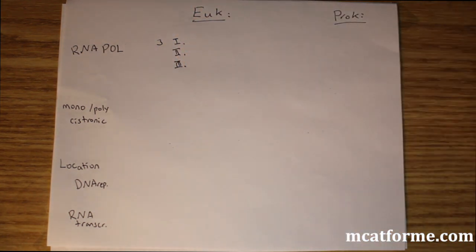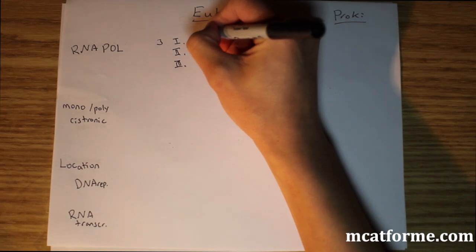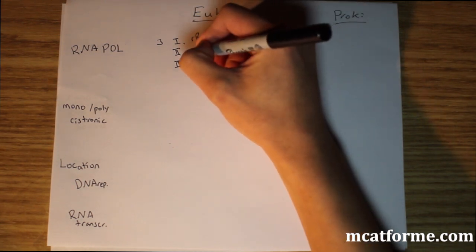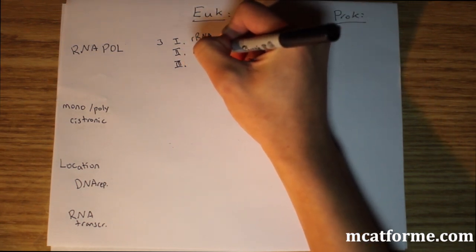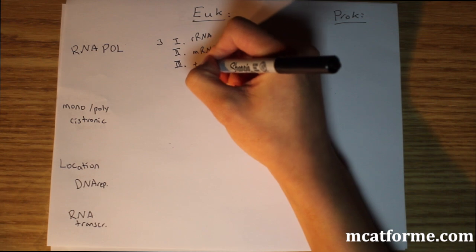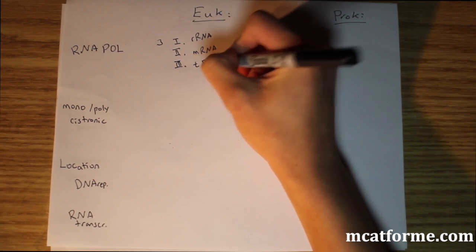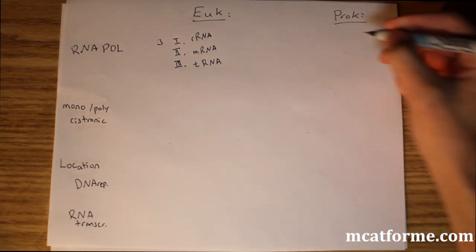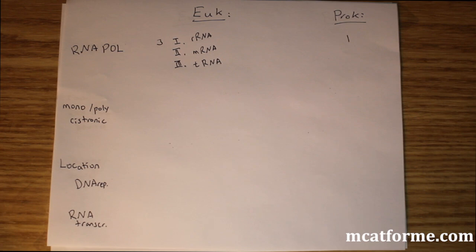The first RNA polymerase transcribes rRNA. The second transcribes mRNA. The third transcribes tRNA. In prokaryotes, we just have one.